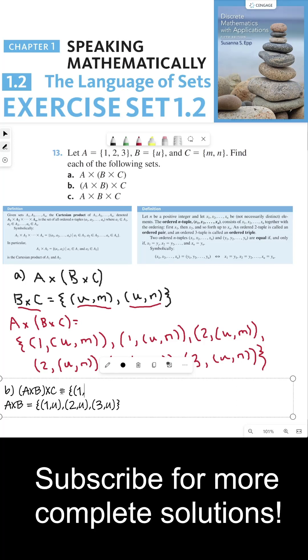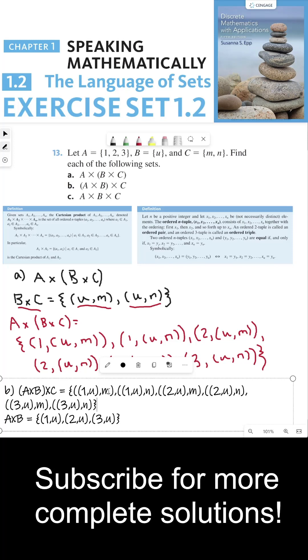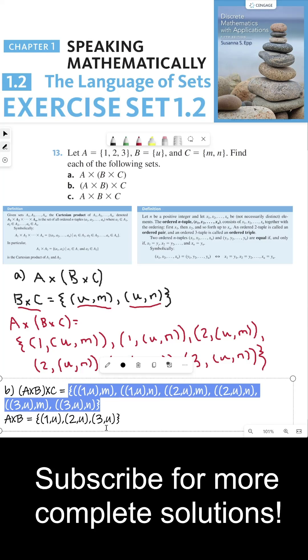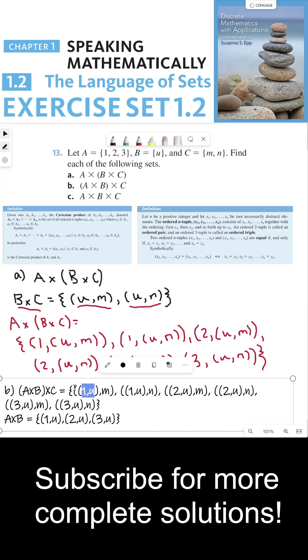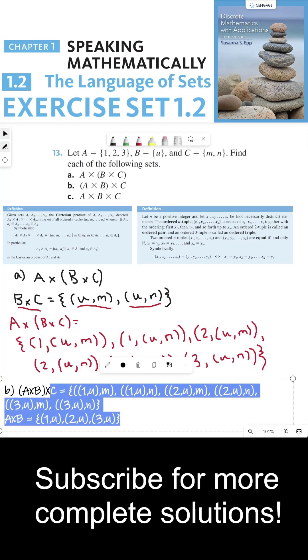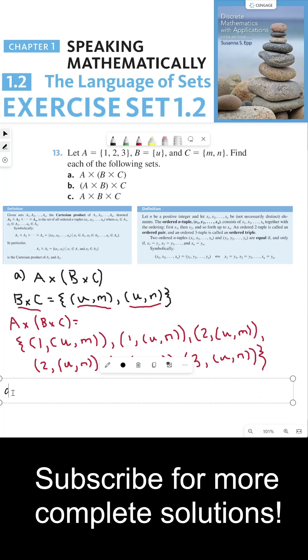And the second element is in C. This set has six elements to it. And if you notice here, for these answers, we have ordered pairs within ordered pairs. That's totally fine. And lastly, for part C, I'm going to erase part B to figure that out.